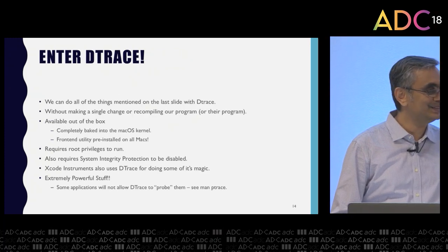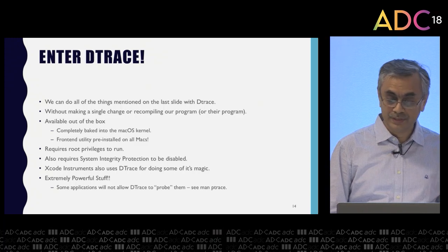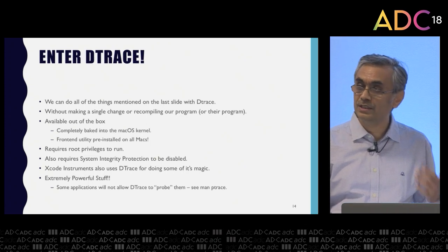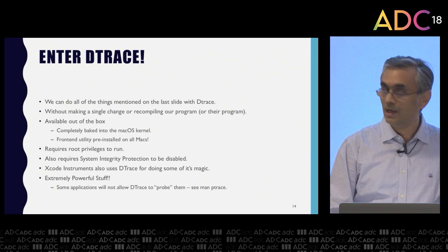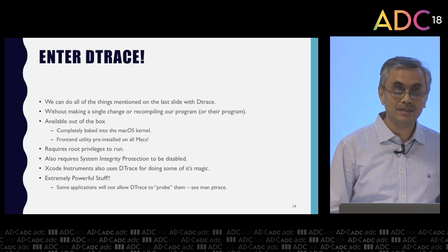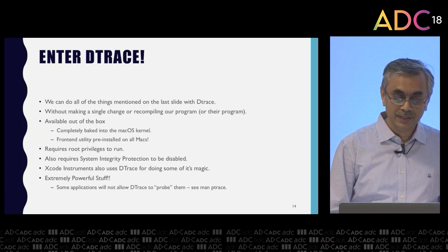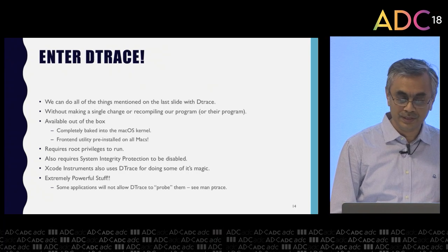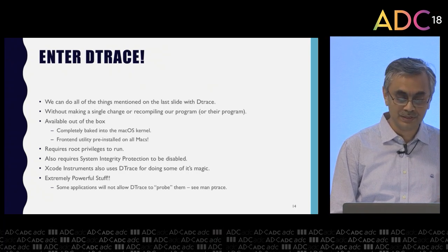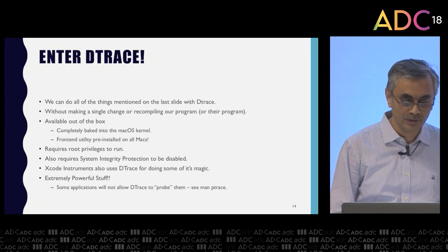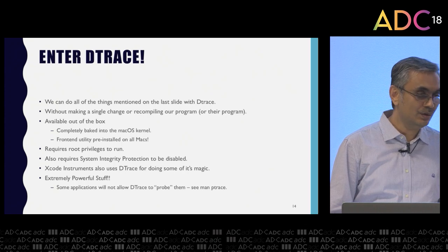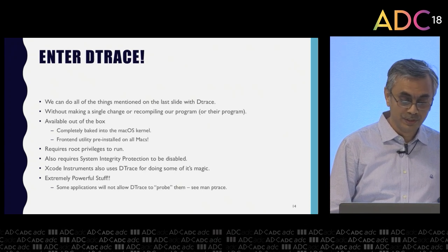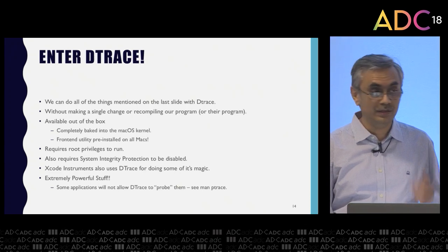We have something called `dtrace`. We can do all the things I listed with dtrace, and the nice thing is we can do all of that without making a single change in our released application or other persons' applications. It's available out of the box on macOS. The dtrace system is completely baked into the macOS kernel, and the utility is pre-installed on all Macs — there is nothing for you to install. It does require root privileges to run, and on newer OSes it also requires System Integrity Protection to be disabled. Xcode Instruments also uses dtrace internally to do some of its magic.